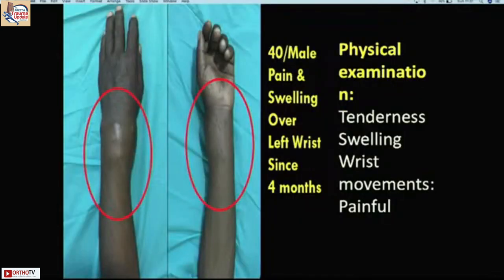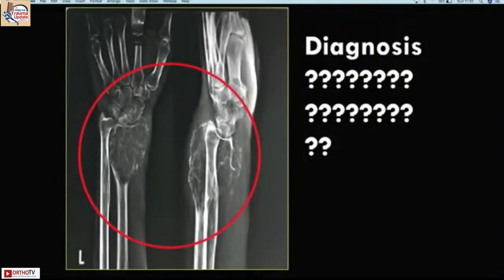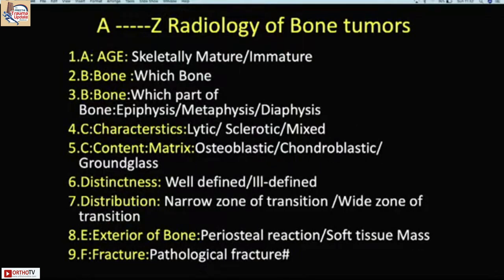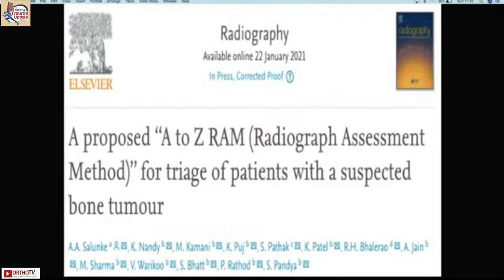A patient presented with swelling over the wrist. To read an X-ray properly, there must be a systematic method. We developed the A-to-Z RAM method: A is for age of the patient, B is for the bone and which part, C is for content, D is for distribution, E is for exterior of the bone — periosteal reaction and soft tissue mass, F is for fracture, and Z is for zone of transition. This was published in the Radiographic journal in 2021.